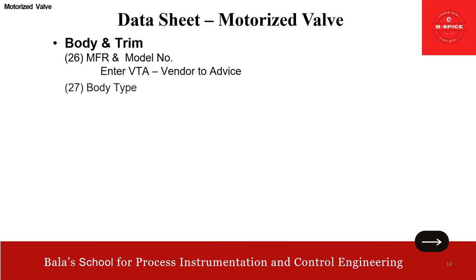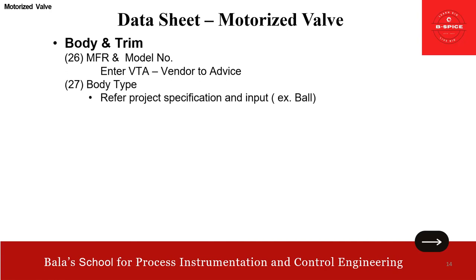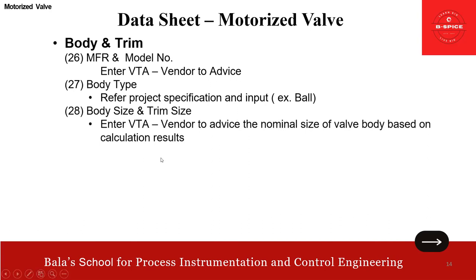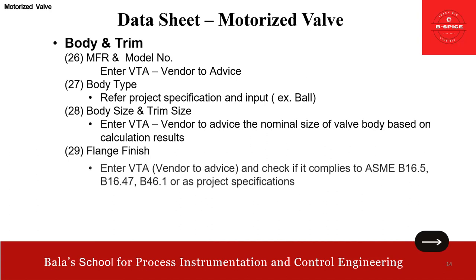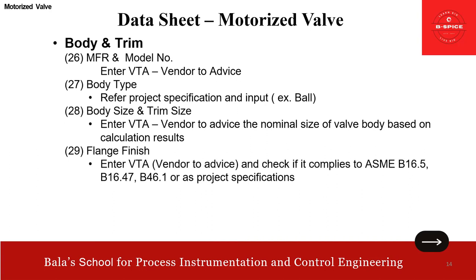Then we come to the main part of the motorized valve — similar to control valve, here also body and trim. Manufacturer and model number — in this case we just enter VTA. Body type — refer to the project specification; in this case input as ball valve, just for example. Then body size and trim size — enter VTA, because the vendor has to advise the nominal size of the body based on the calculation results. Flange finish — also enter VTA. We need to check and comply whether it conforms to ASME B16.5, B16.47, B46.1, or as per process requirements — this is very important.